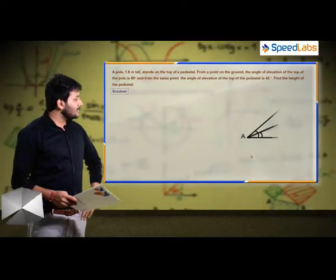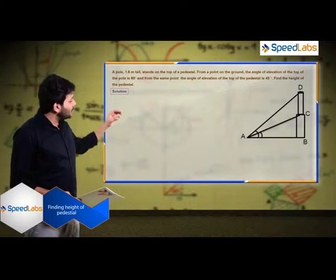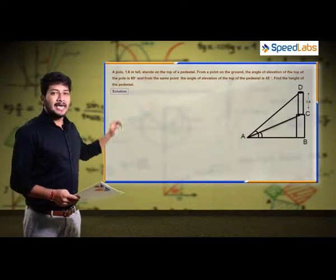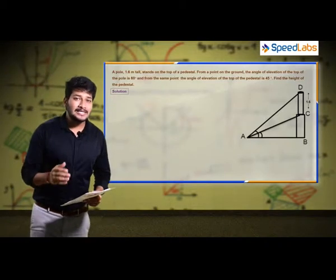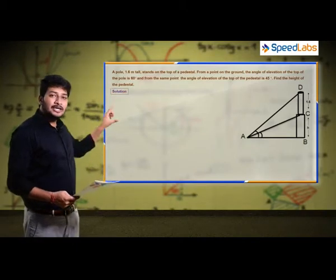The next problem involves a pole on top of a pedestal. The height of the pole is given as 1.6 meters. I'm assuming the height of the pedestal is h, which we need to calculate.